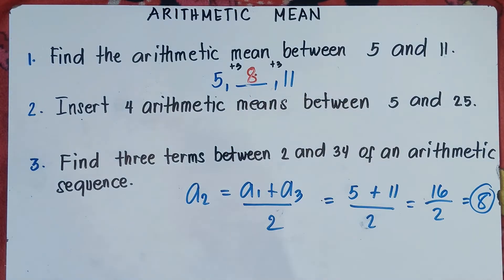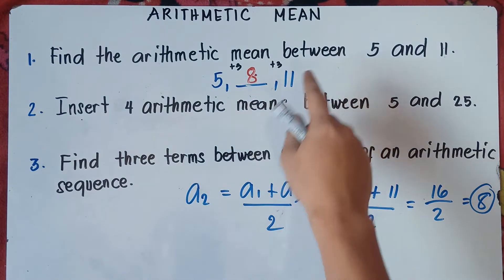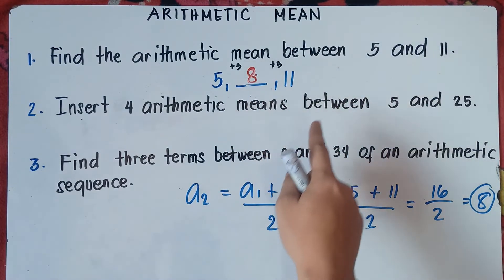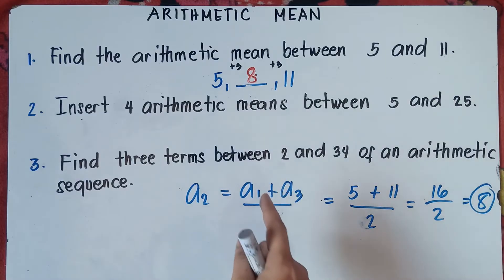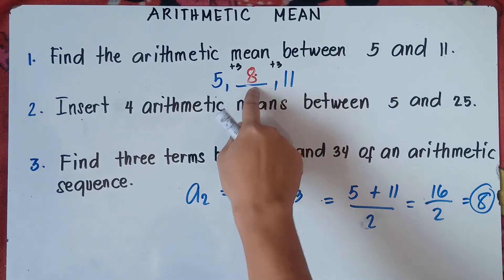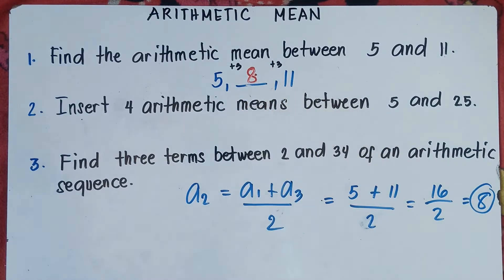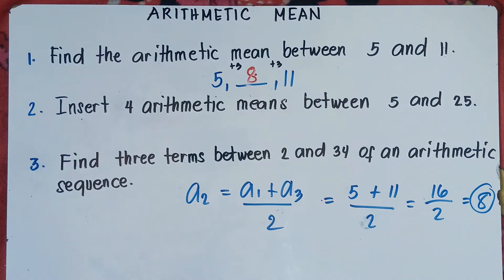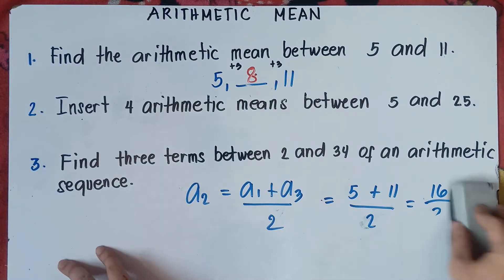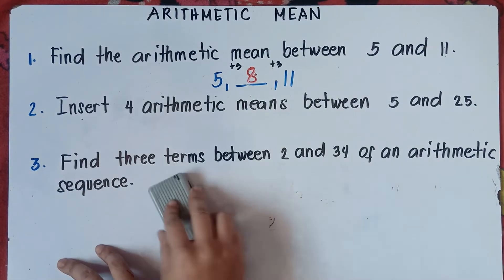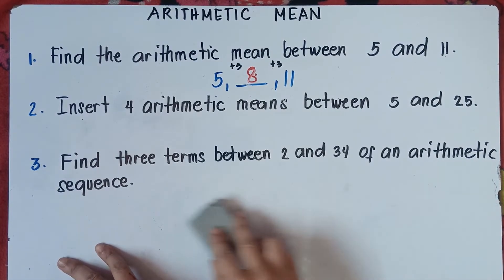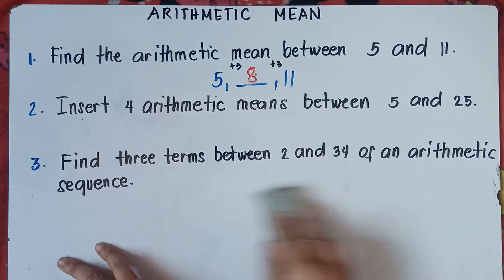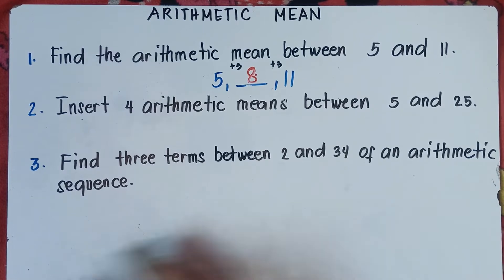So the arithmetic mean, or the average between these two numbers, is simply 8. Once again, if you have this question, simply add the numbers and then divide it by 2 and you get the middle number — the mean. Alright, let's try number 2.